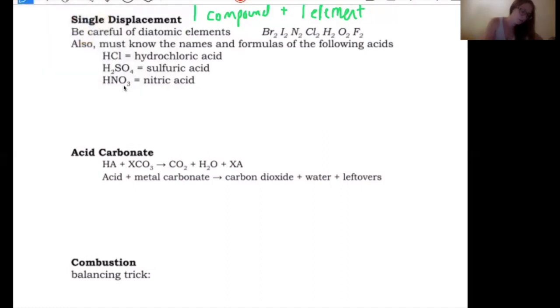Single displacement reactions: if we are starting with a compound, something like AB, and then we are reacting it with some element, something just like C, so there's no D in this case. What's going to happen is that C, when it's by itself, an element by itself doesn't have a charge. So C doesn't have a charge, but if it were a positive charge, it would go and displace the other positive charge.